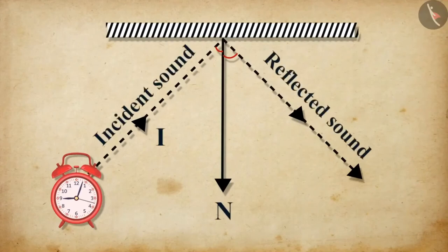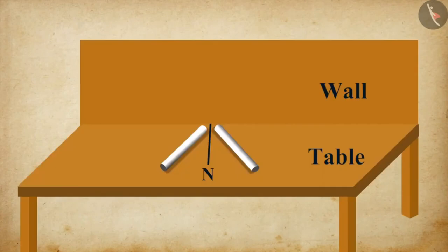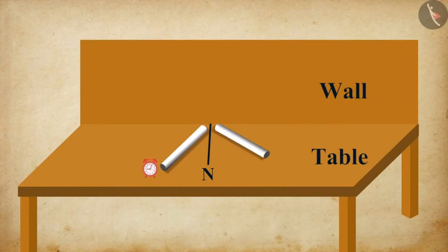Now let us perform a simple experiment to understand the relationship between the angle of incidence and the angle of reflection. Take two identical pipes of sufficient length and place them on a table near to a wall. Now place a clock or a vibrating mobile phone at one open end of one of the pipes. Then try to hear the ticking of the clock by placing your ear at the open end of the other pipe.